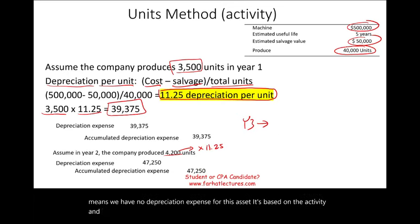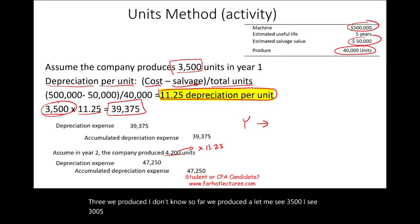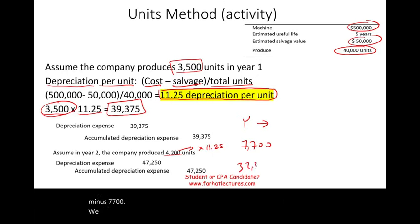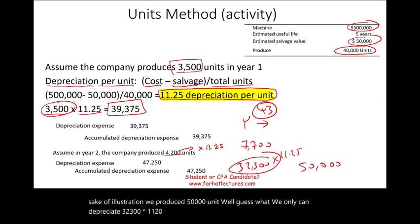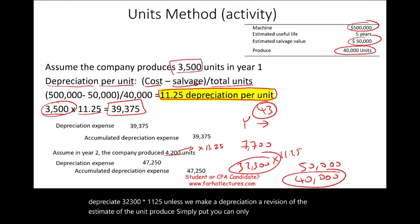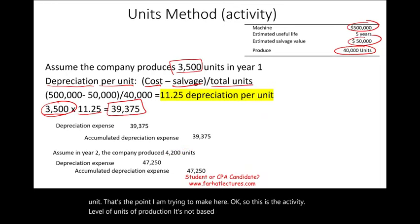If in year three we did not use this asset at all, we produce zero units, meaning there's no depreciation expense — it's based on activity. So far we've produced 3,500 plus 4,200 equals 7,700 units. We have 40,000 total minus 7,700, leaving 32,300 units of potential depreciation. If in year three we produce 50,000 units, we can only depreciate the remaining 32,300 units times $11.25 — you can only depreciate up to the 40,000-unit total unless you revise the estimate.